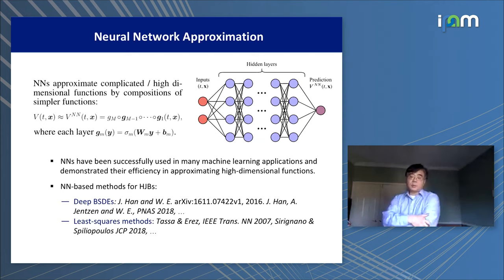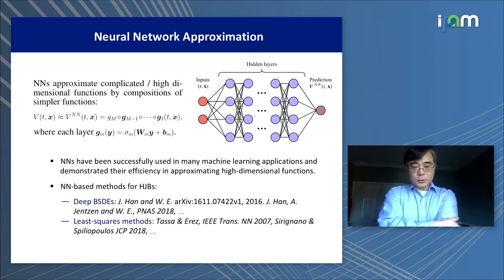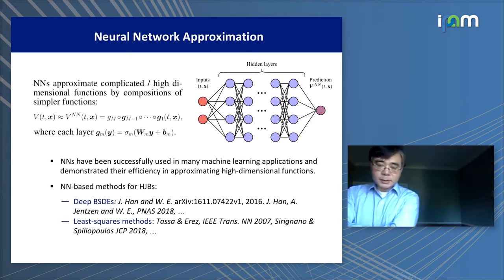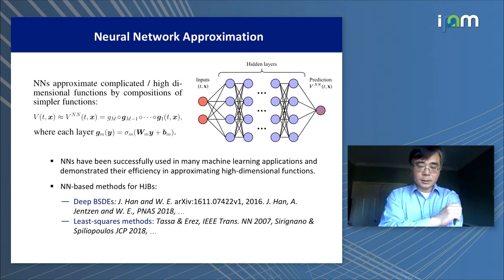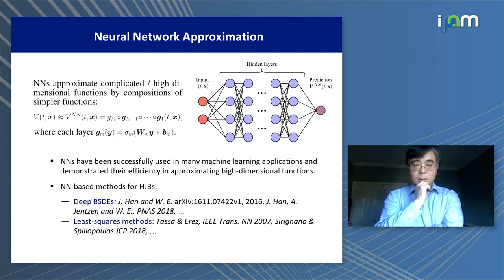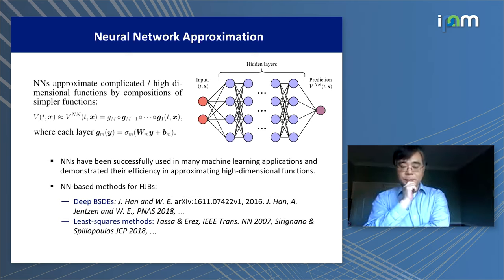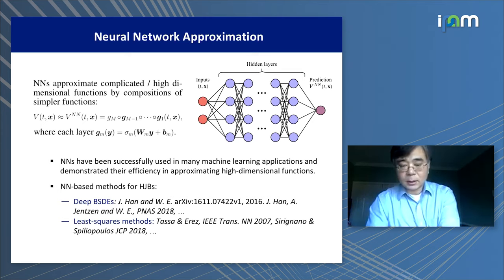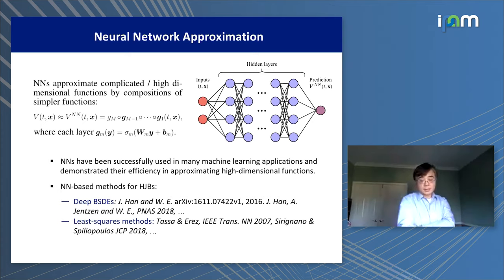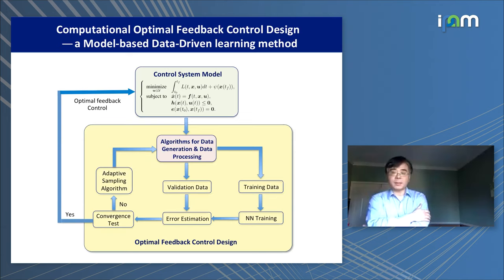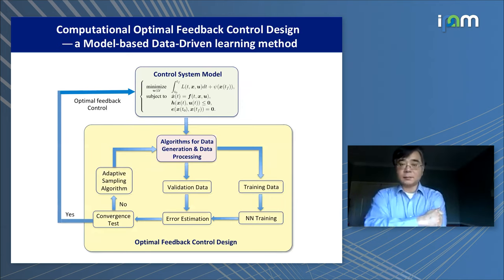Recently, neural networks have also been used to approximate solutions to HJB equations. For example, Han and Weinan utilized backward stochastic equations with neural networks to approximate solutions to some high-dimensional stochastic optimal control problems. Neural networks have also been used in a least-squares approach to solve HJB equations by minimizing the residual of the HJB equation.